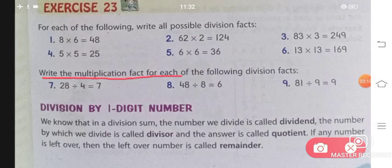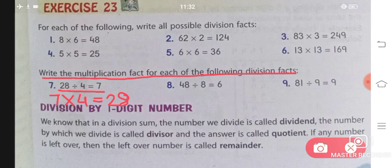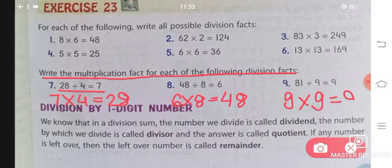Next: write the multiplication facts for each of the following division facts. In question 7, division is given and you have to write the multiplication. For example, 28 divided by 4 gives 7, so 7 multiplied by 4 gives 28. For question 8: 48 divided by 8 gives 6, so 6 multiplied by 8 gives 48. For question 9: 81 divided by 9 gives 9, so 9 multiplied by 9 gives 81. With this, Exercise 23 is completed.